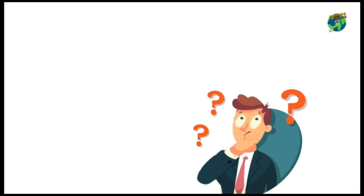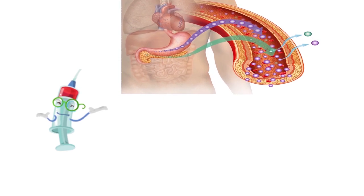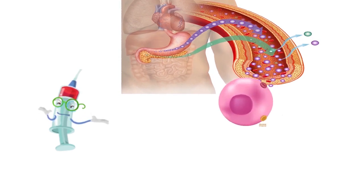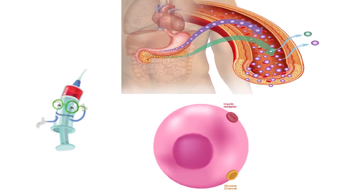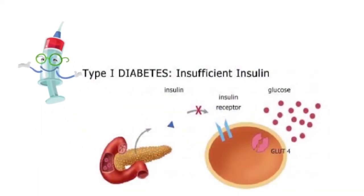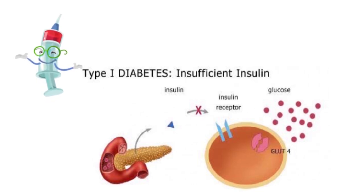Before that, do you know how diabetes mellitus happens? I will give a brief idea about insulin. So what is insulin? Insulin is a hormone produced in the pancreas by beta cells which regulate the amount of glucose in blood. It allows your body to use glucose for energy. If your body does not produce enough insulin, or your cells are resistant to the effect of insulin, you may develop hyperglycemia, i.e., high blood sugar.